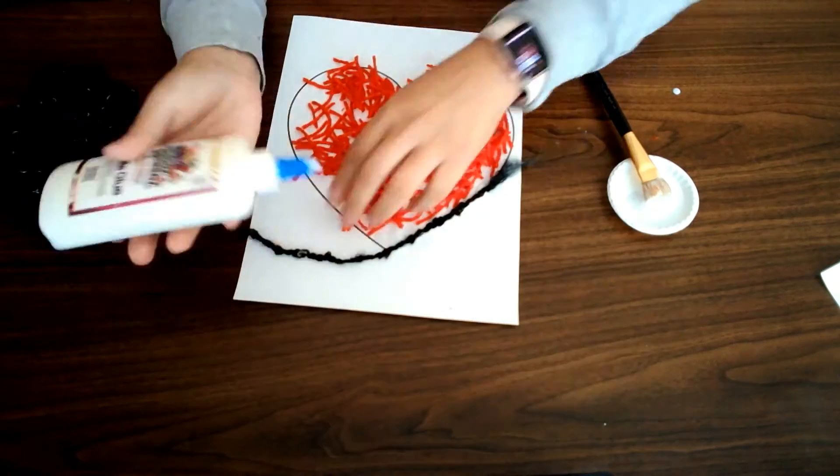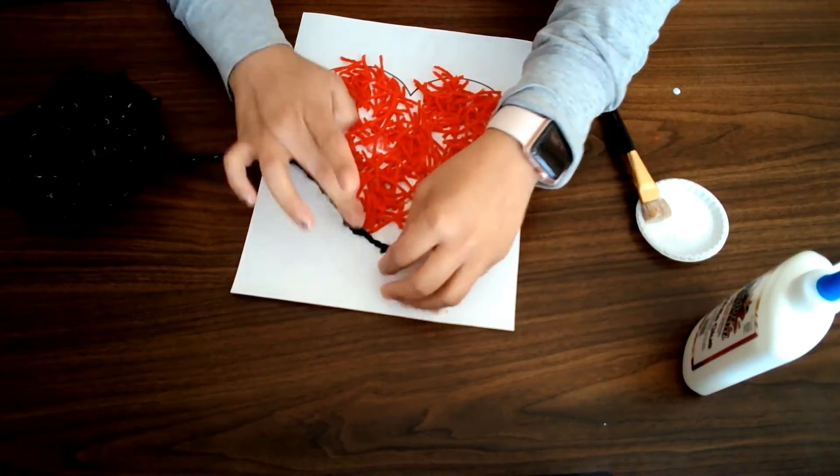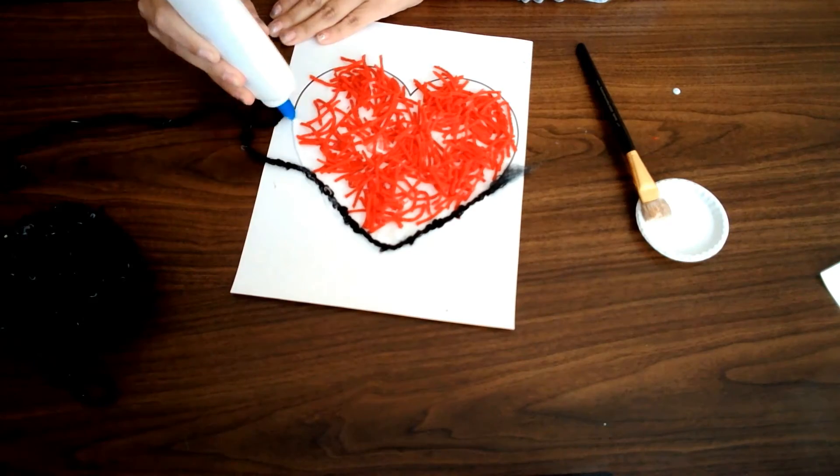Now that I'm done filling in my heart with the red yarn, I'm going to outline the heart with glue and add the black yarn.